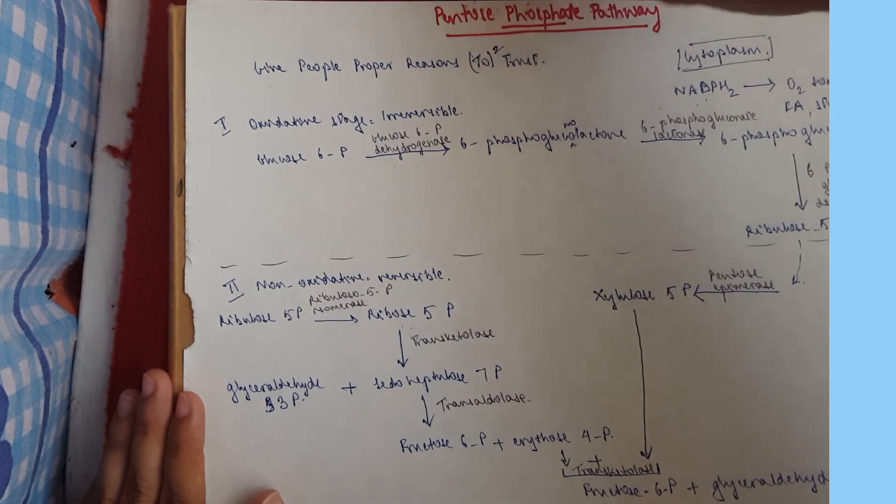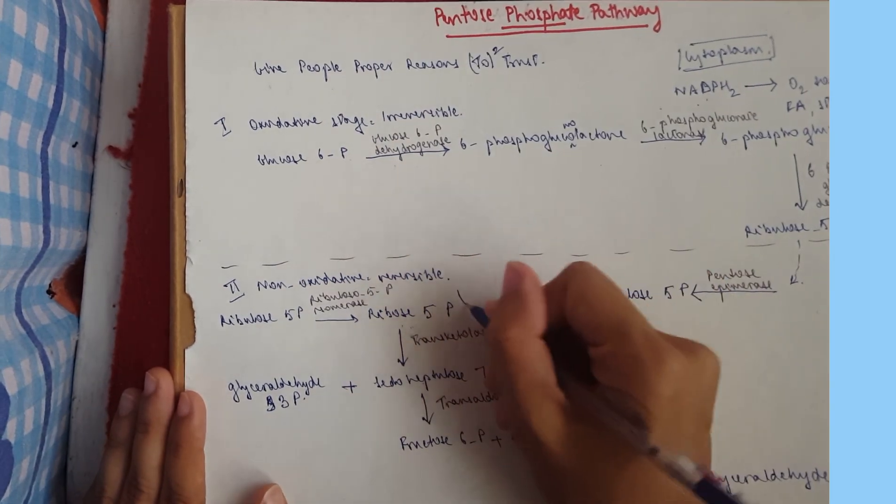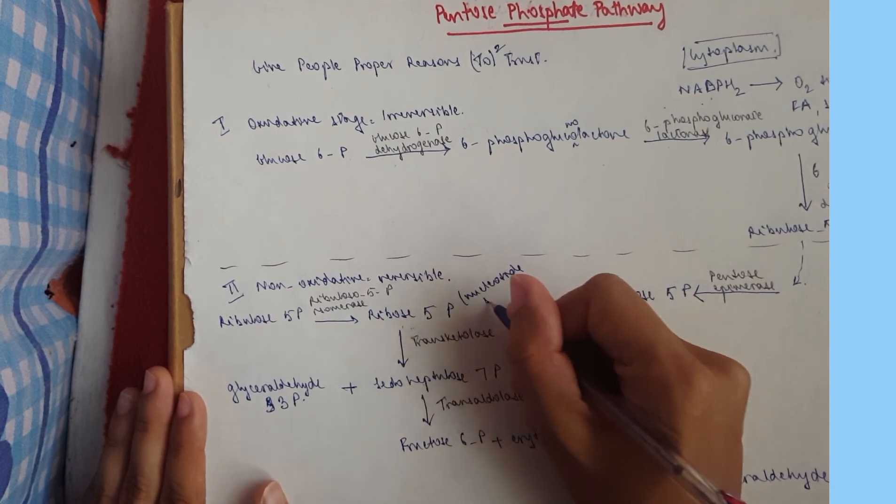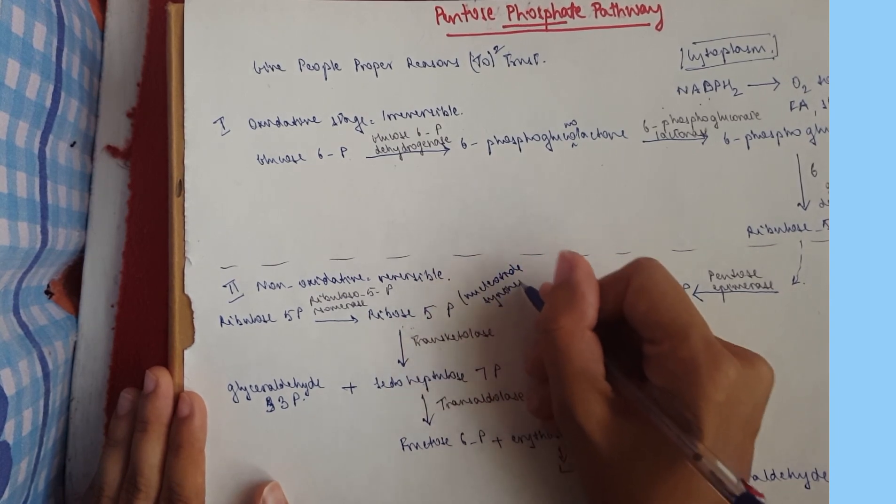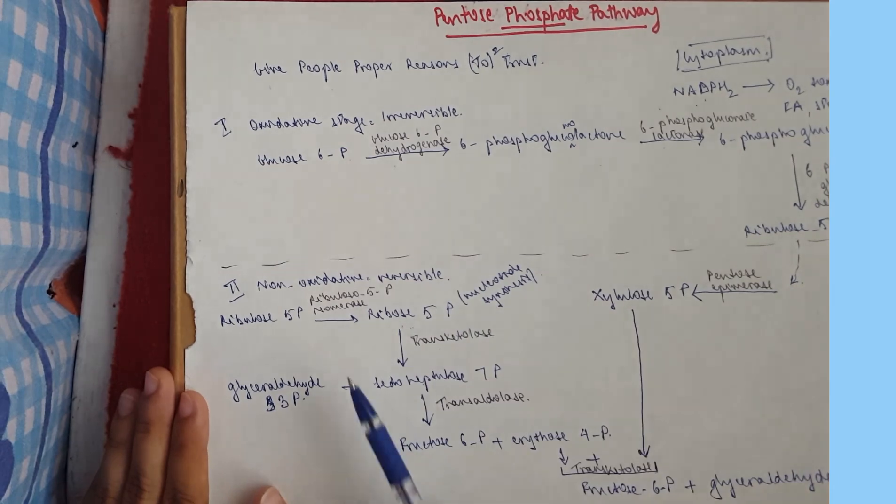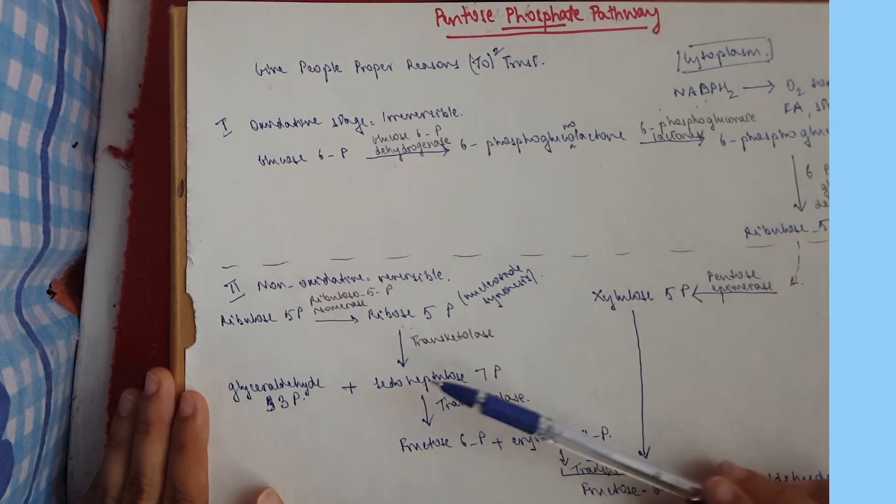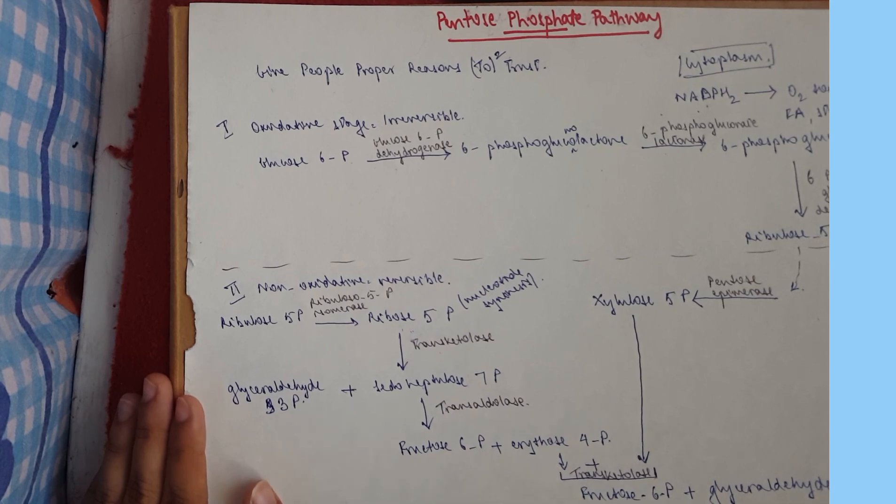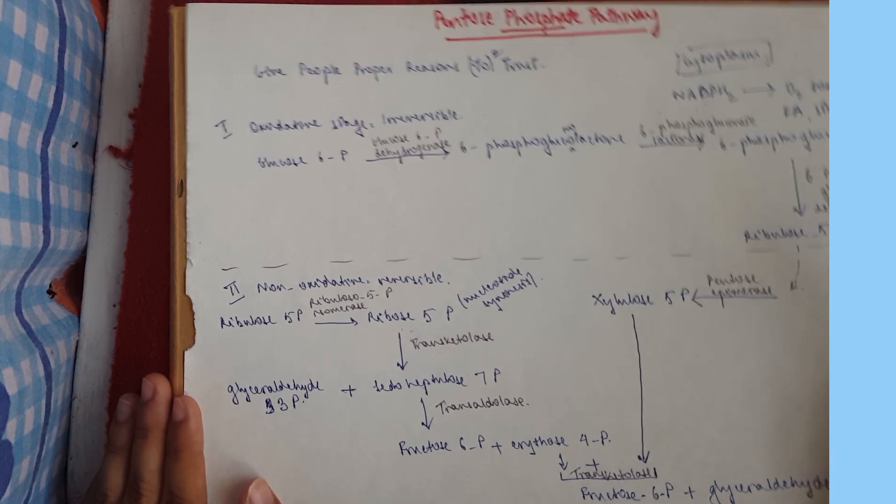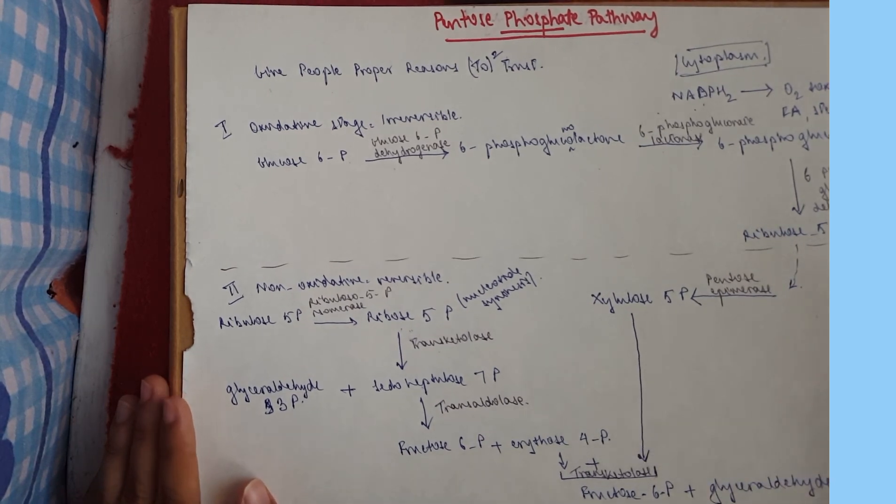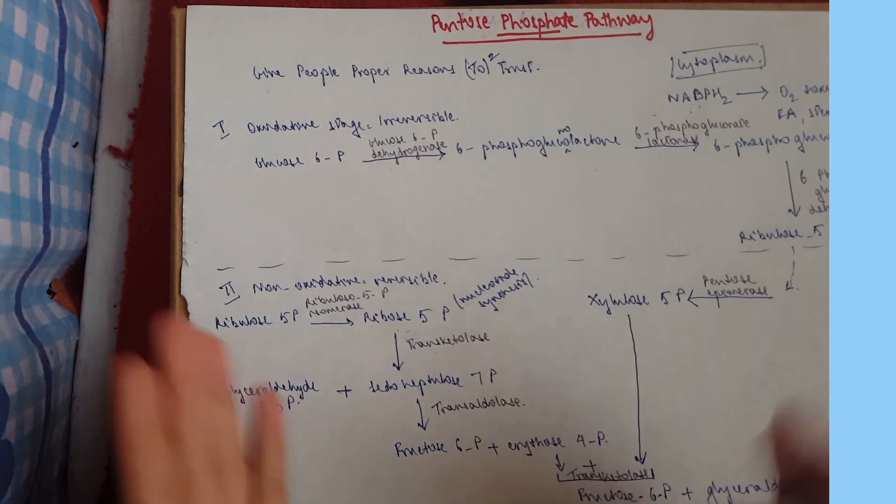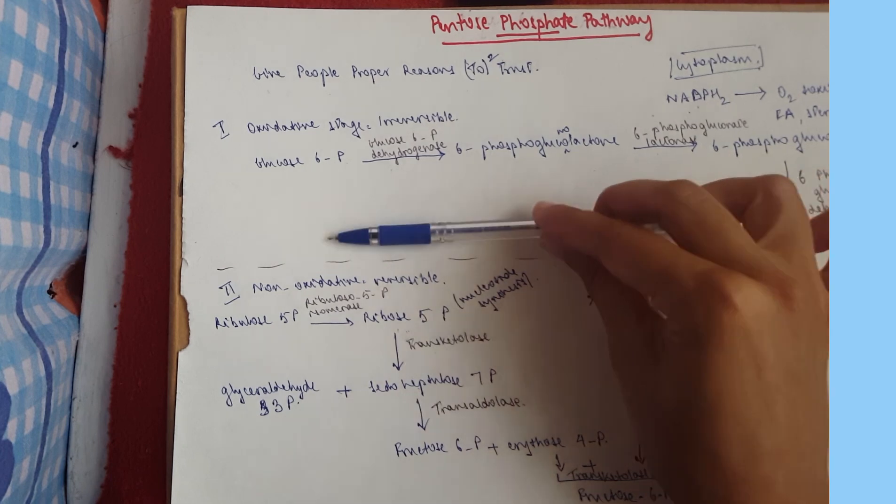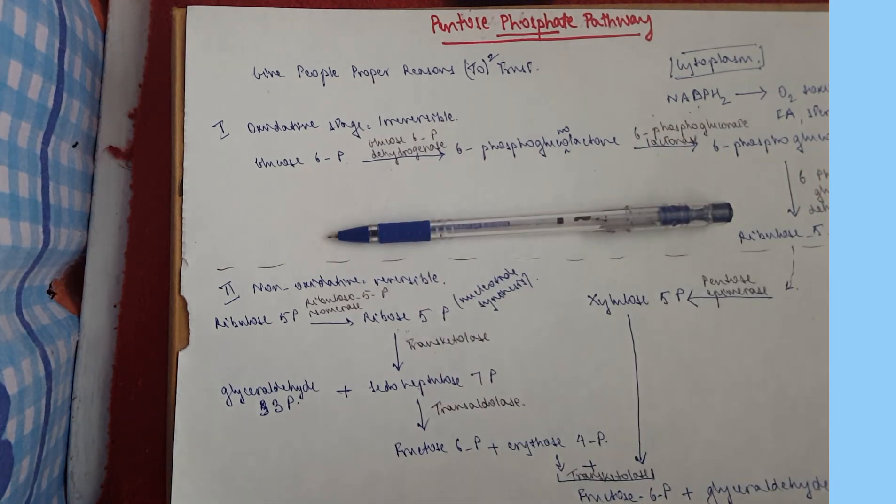So this is our pentose phosphate pathway. And here I'm going to write nucleotide synthesis, oxidative, non-oxidative, irreversible, reversible, interconversion of different sugar phosphates. And yeah, remember ATP is not generated and it's active during lipogenesis and the organs that I've mentioned earlier. So that's it for this topic.